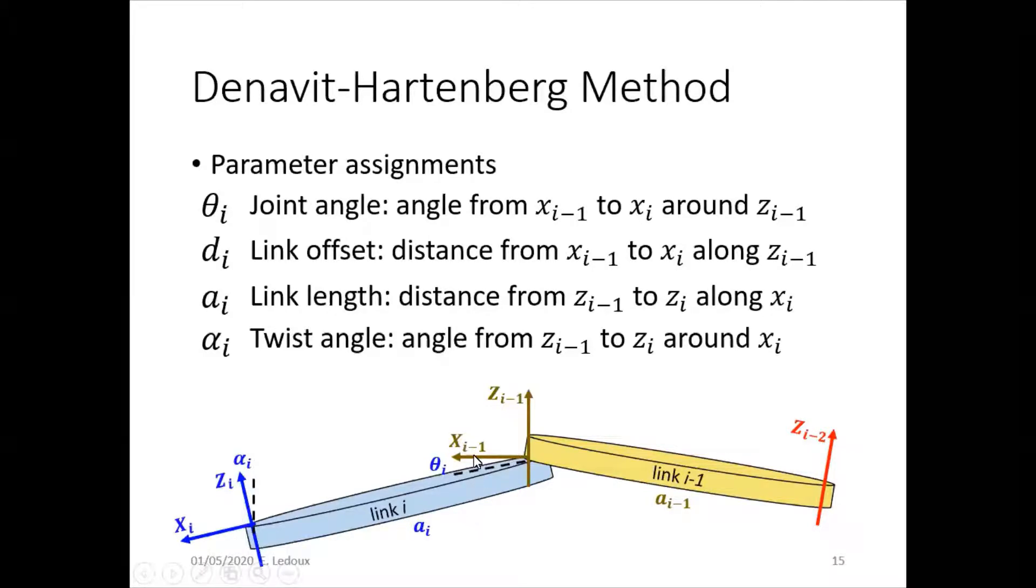The offset is the parallel distance between those two X axes. In this case, there's not really a parallel distance because the origin of both frames are along the link. But if, for example, this yellow frame was located up at the top of link i-1, then that link offset would be the thickness of the link.